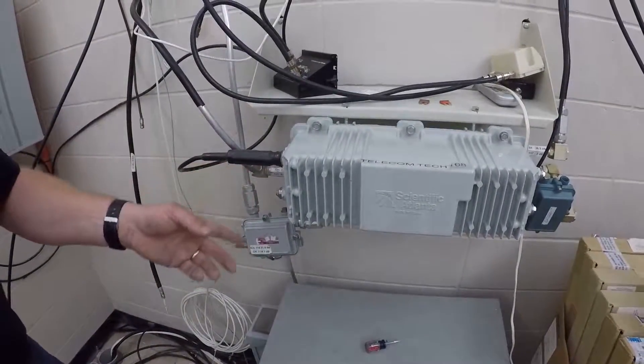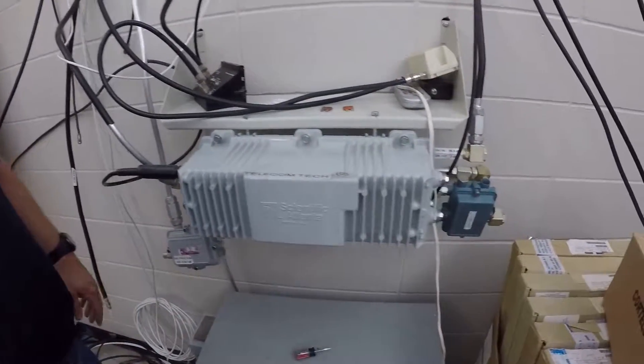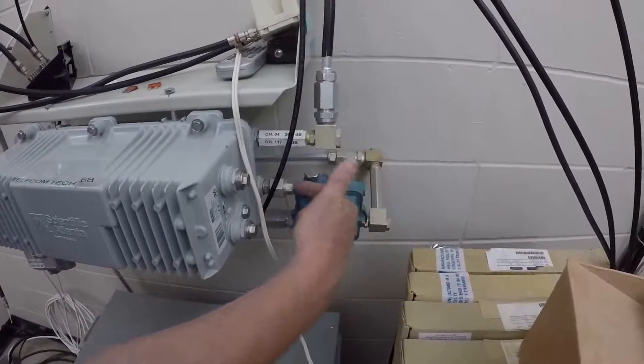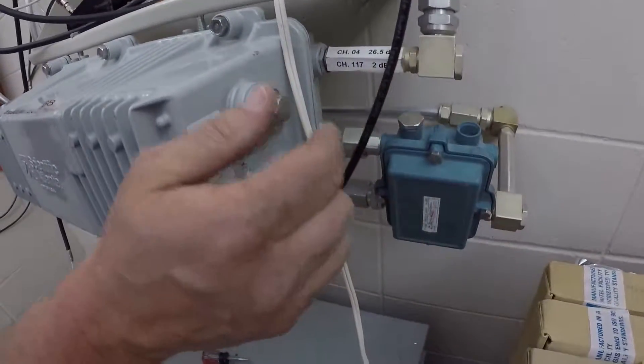The node then, once again, converts from light signals to electrical. Your power supply comes up. This is a power inserter. This converts that AC voltage into DC and powers this up.